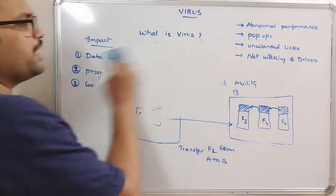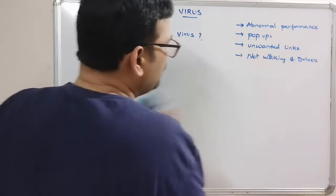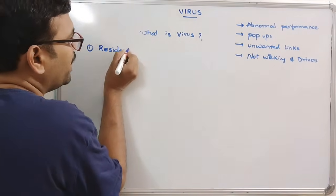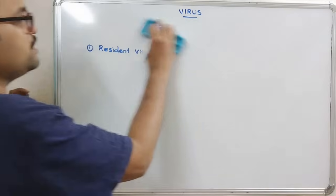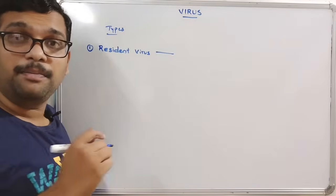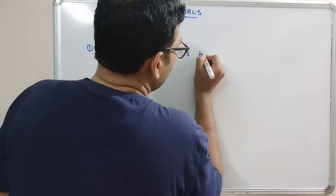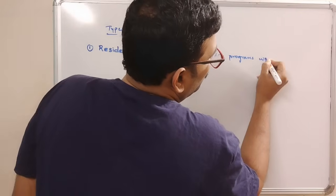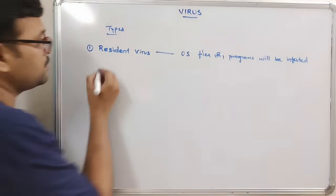Now, what are the different types of viruses? The first one is the resident virus. A resident virus means the virus will be placed in our operating system files — the OS files or programs will be infected.